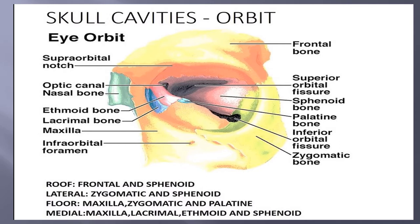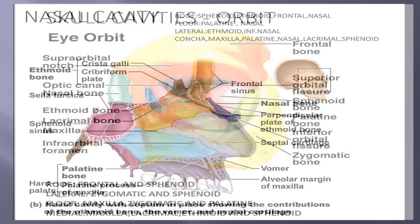Here we move to the skull cavity orbit — the eye socket. Seven bones surround or make the orbital cavity or eye socket: the frontal bone, sphenoid bone, zygomatic bone, ethmoid bone, lacrimal bone, and palatine bone. These seven bones form the roof, lateral wall, floor, and medial walls of the eye socket.